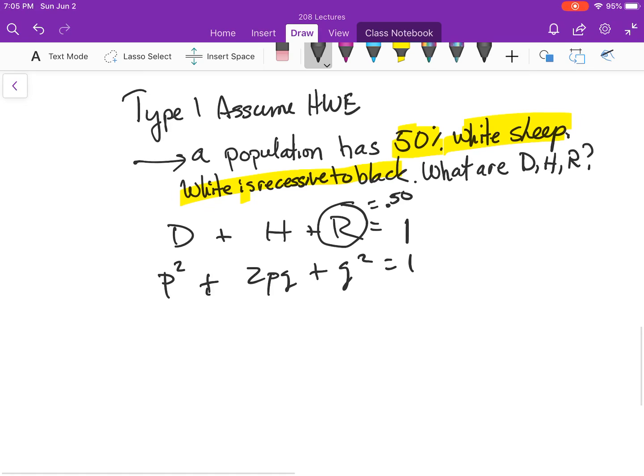We also know, because of looking this way, that R is equal to Q squared. R equals Q squared equals 0.5.